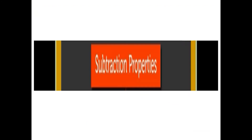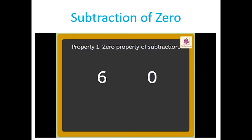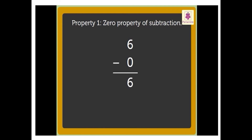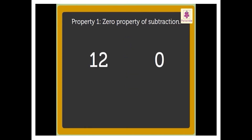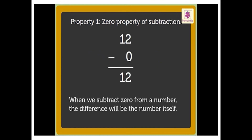Now let us learn the properties of subtraction. The first property is the zero property of subtraction. We know that zero means nothing. Therefore when nothing is subtracted from a number, the number remains the same. For example, when we subtract zero from six, we get six. When we subtract zero from twelve, we get twelve. So we can say that when we subtract zero from a number, the difference will be the number itself.